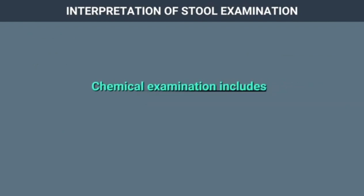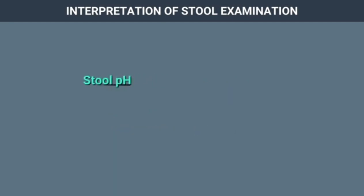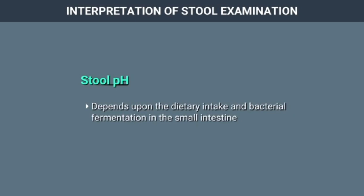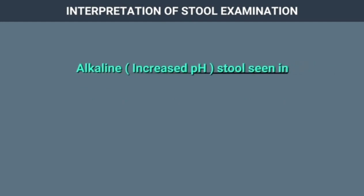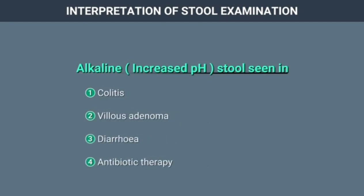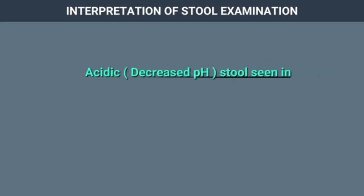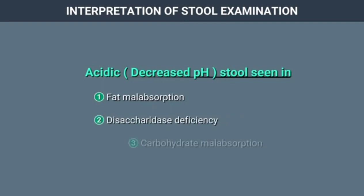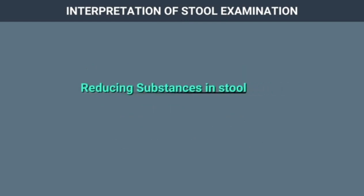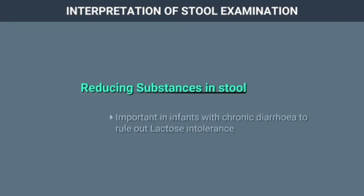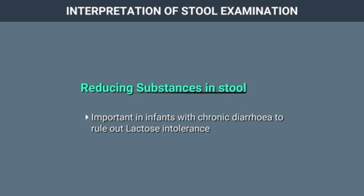Chemical examination of stool includes stool pH and reducing substances. Stool pH depends upon dietary intake and bacterial fermentation in the small intestine. Alkaline stools can be seen in colitis, villous adenoma, diarrhea, and antibiotic therapy. Acidic stools may be seen in fat malabsorption, disaccharide deficiency, and carbohydrate malabsorption. Reducing substances in stool are important in infants with chronic diarrhea to rule out lactose intolerance.